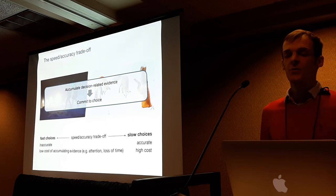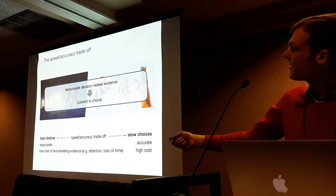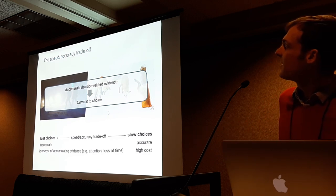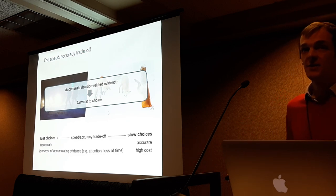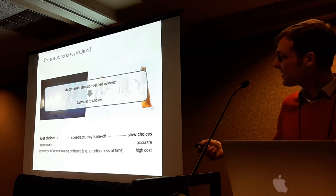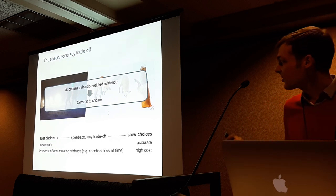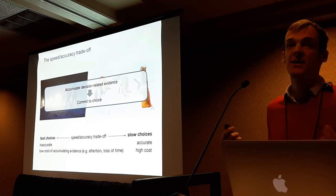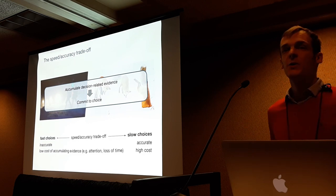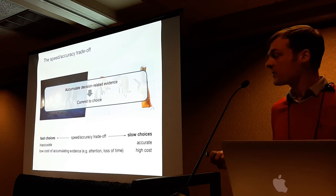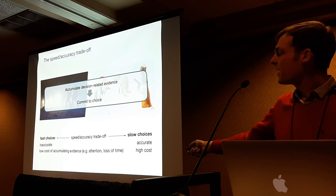This leads very naturally to what's known as the speed-accuracy trade-off. On one side, you have very fast choices — they tend to be inaccurate because you don't have a lot of evidence, but they come at a low cost of accumulating evidence, which might be attention or loss of time. On the other side, you've got slow choices, which are based on potentially a lot of evidence and may be very accurate, but they also come at a high cost.